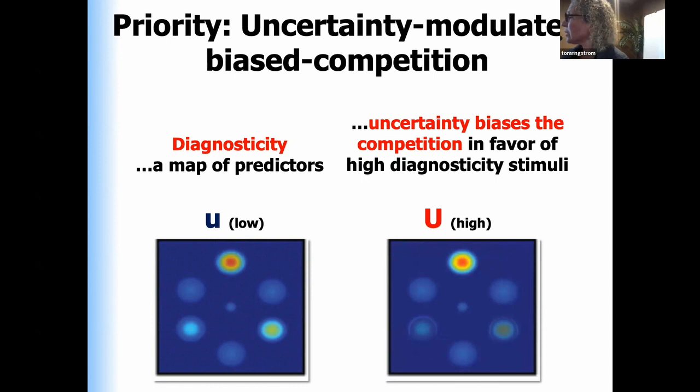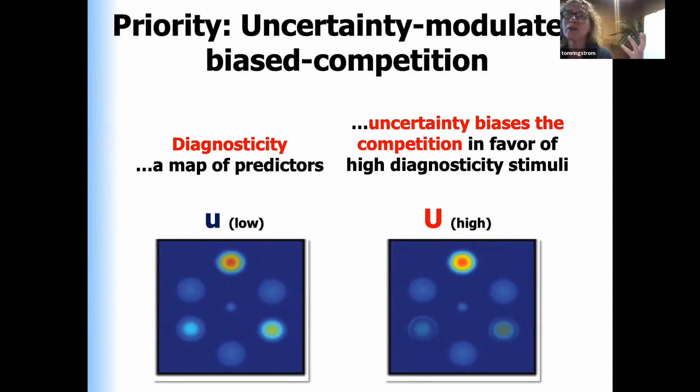I'm not explaining here exactly how the map of diagnosticity arises. That's a very important question we're working on — it probably involves very long-term learning. In humans it also arises by instruction, and I think it's a concept-based process, some sort of model- or memory-based process.